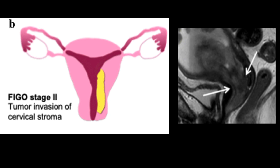Stage 2 is where there is cervical stromal invasion, as in the initial case shown in this video. This is best evaluated on post-contrast imaging two to three minutes after injection, and will be seen as lack of enhancement in the normal cervical mucosa. Stage 2 changes management from a total abdominal hysterectomy to a radical hysterectomy and pre-op radiation to the cervix.